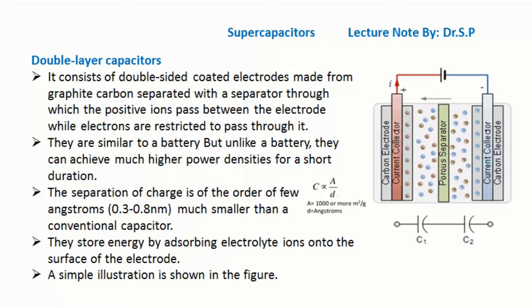The separation of charge is on the order of a few angstroms, much smaller than a conventional capacitor. They store energy by absorbing electrolyte ions onto the surface of the electrode. A simple illustration is shown in the figure.